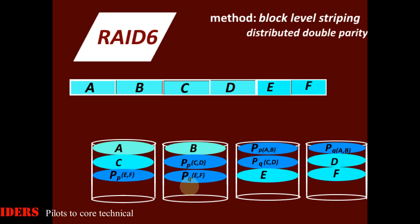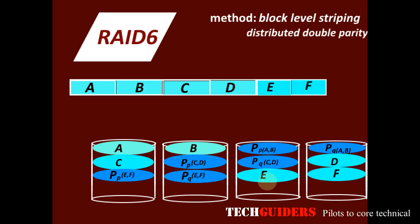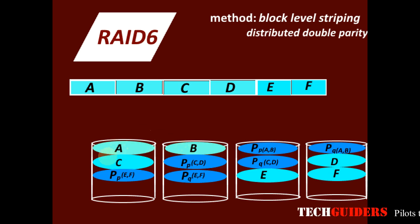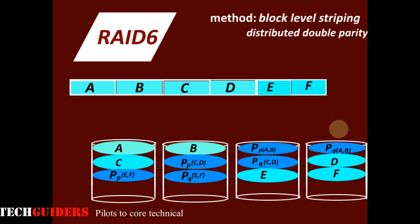And about the disk capacity. It keeps about two disk space equivalent for parity. If we bring all these parity blocks together, we can see that it occupies about two disk capacity. Thus for n disks, about n-2 is the usable disk capacity. And for striping we need minimum two disks, and for parity we are reserving two disks. Thus the minimum number of disks required for RAID 6 setup is four.